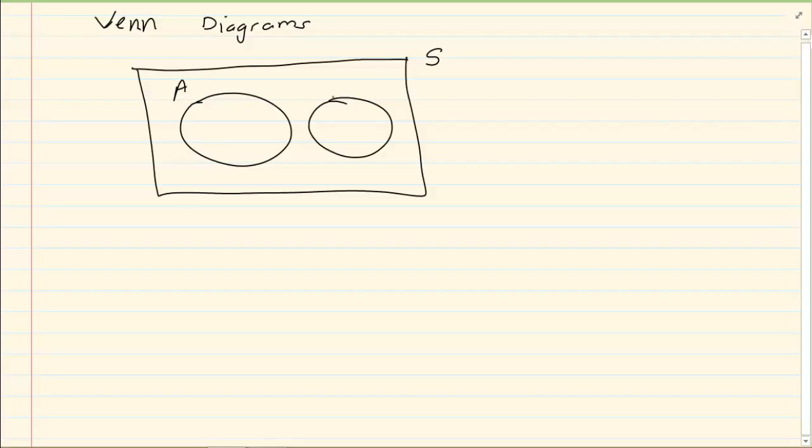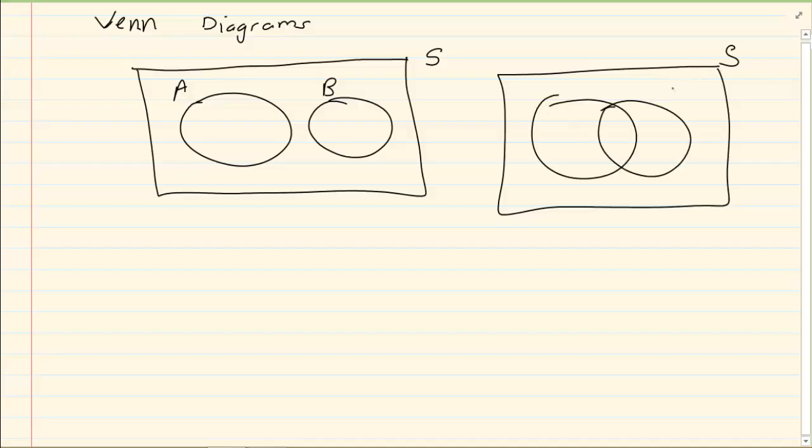So I could have event A and event B. Sometimes these circles overlap and sometimes they don't. Now overlap simply means that they have the same thing in both blocks. And when they don't overlap it means that there is nothing in common.